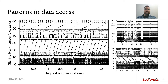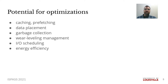The horizontal repetition of these patterns motivates the use of these correlations in storage system optimizations. If data is frequently accessed together and these correlations can be detected efficiently, then these insights can be used to inform self-optimizing storage systems. Some examples of potential optimizations are improved caching and prefetching techniques, more efficient data placement, improved garbage collection and wear leveling in SSDs, intelligent I/O scheduling algorithms, and even energy efficiency techniques.